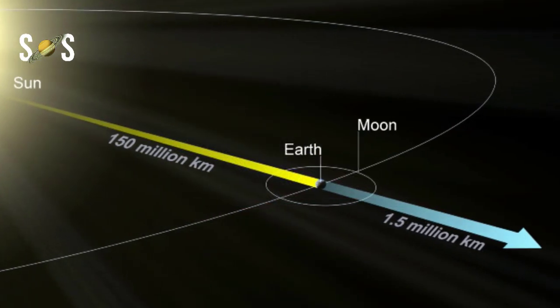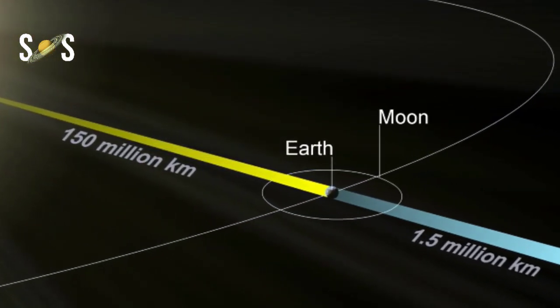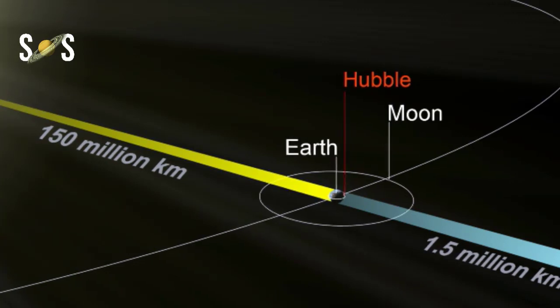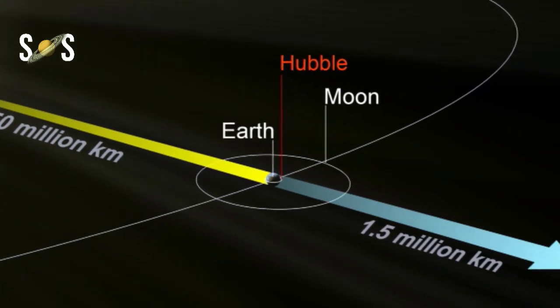The Hubble Space Telescope orbits around the Earth at an altitude of 570 km above it. James Webb will not actually orbit the Earth. Instead, it will sit at the Earth and Sun L2 Lagrange point, 1.5 million km away.